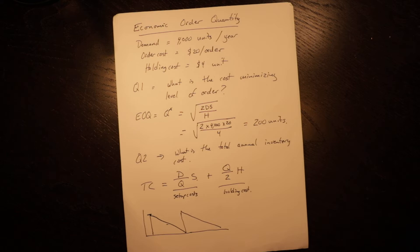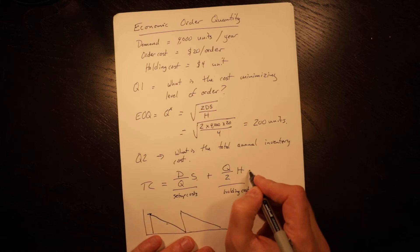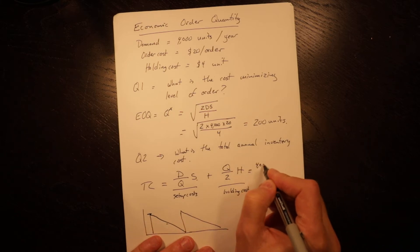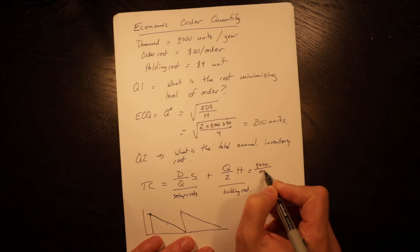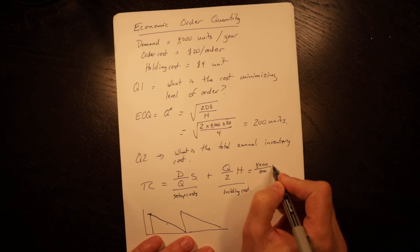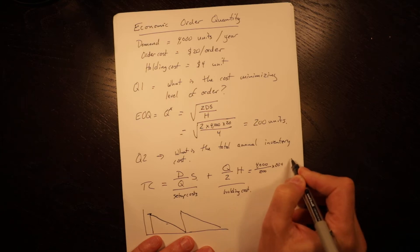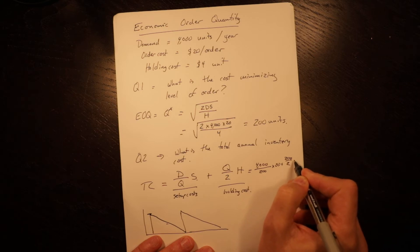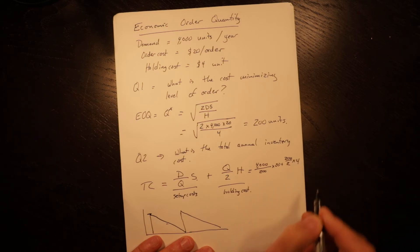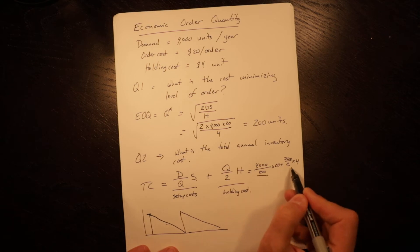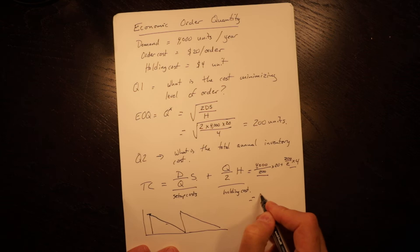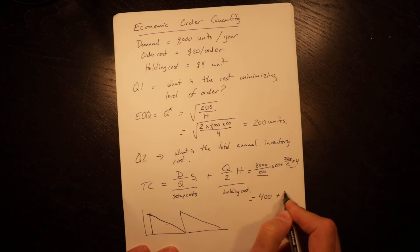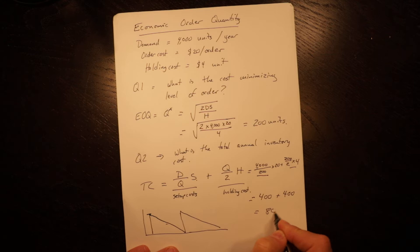In this case, total cost equals 4,000 divided by 200 times 20, plus 200 divided by 2 times 4. Setup costs equal $400 and holding costs equal $400, for a total of $800.